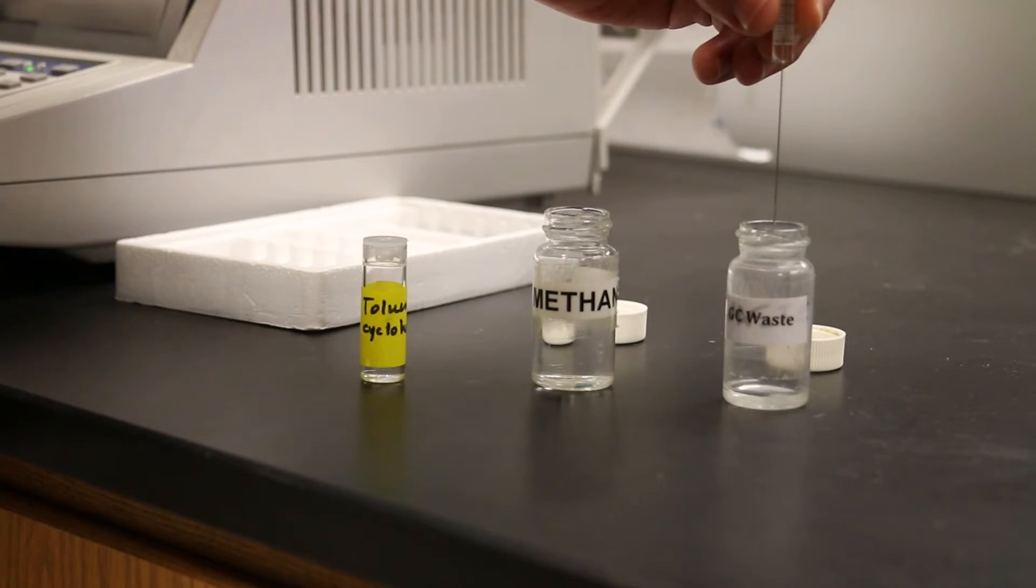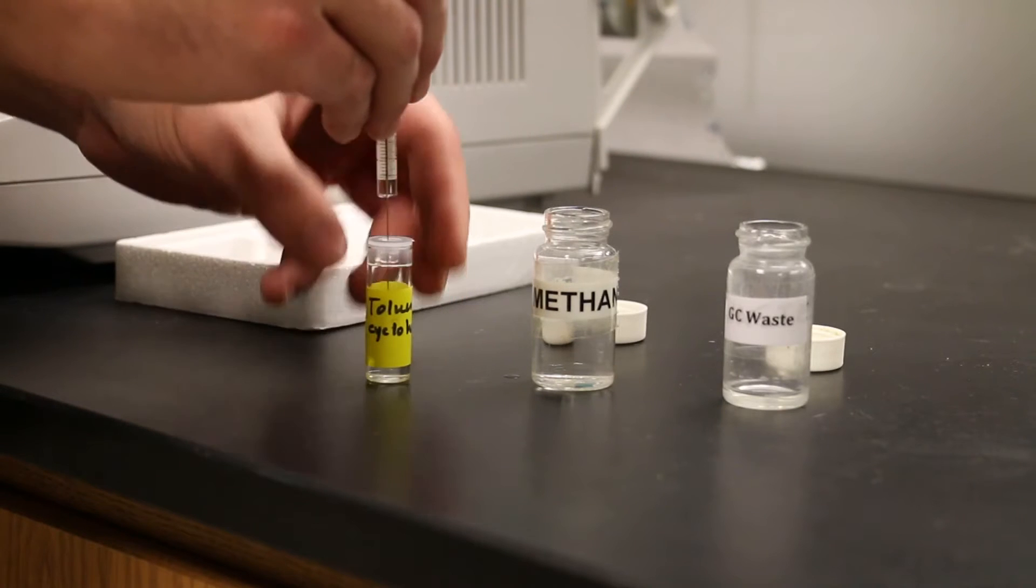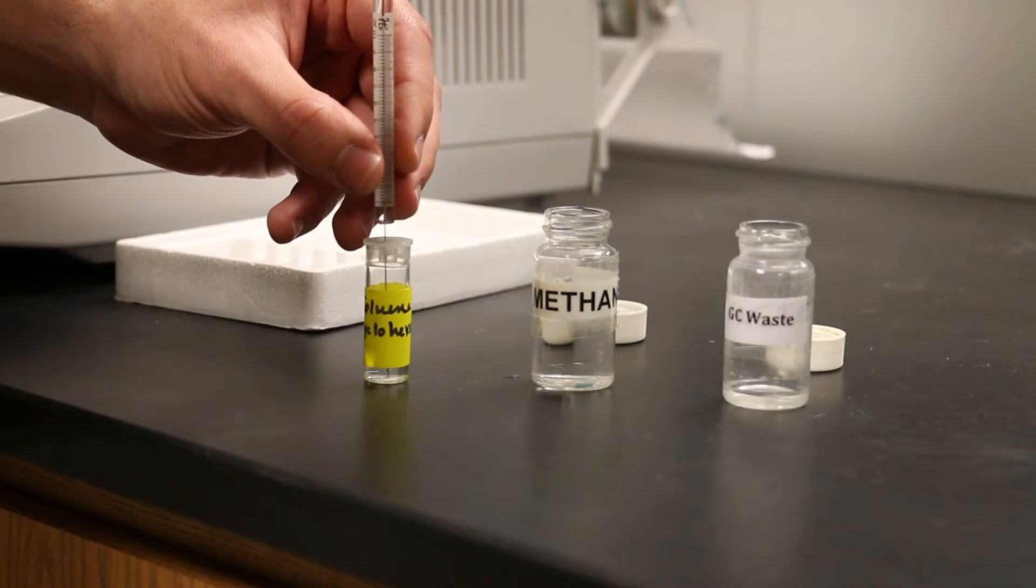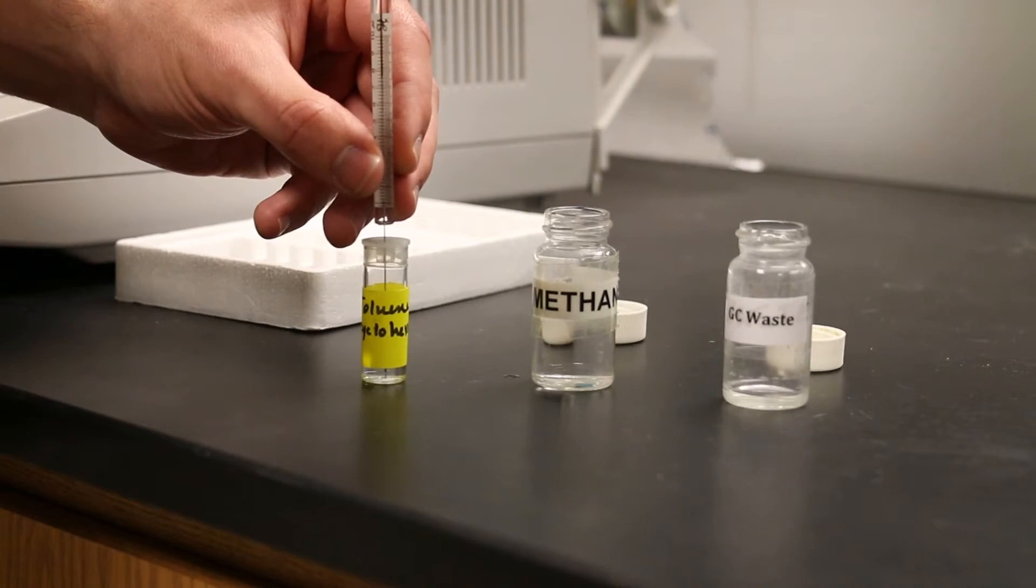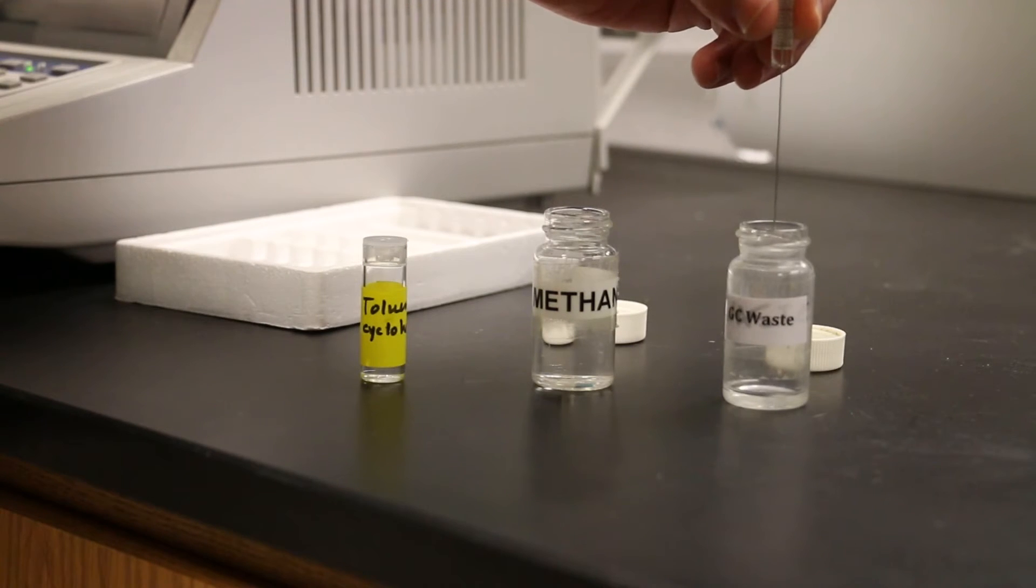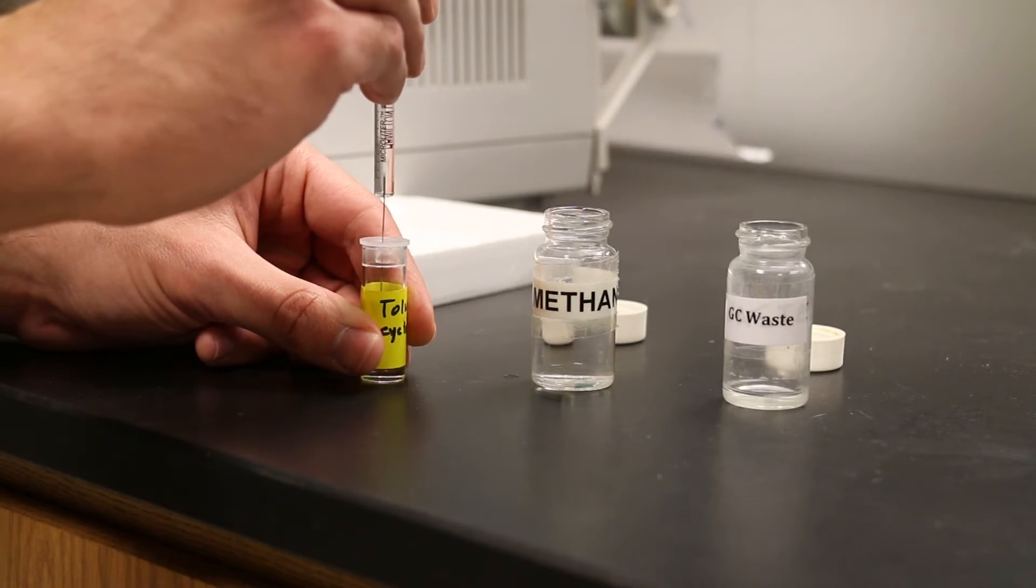After rinsing your syringe twice with methanol, you want to move the syringe to your sample and rinse the syringe twice using your sample. Your sample will probably be in a vial with a perforated cap that the syringe needle can push right through. Repeat the rinsing of your syringe with your sample. Now you're ready to put the sample in the syringe for an injection.